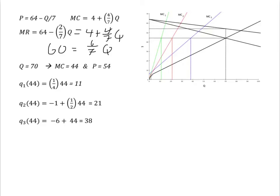Plugging that 44 into each plant's output function, we get the division of the profit maximizing level of output across the three plants at 11, 21, and 38 units, respectively.